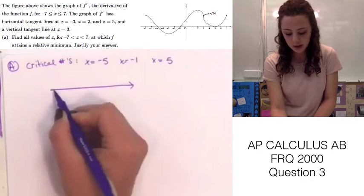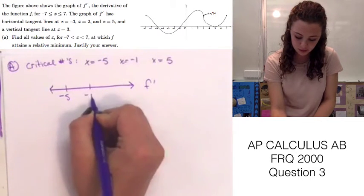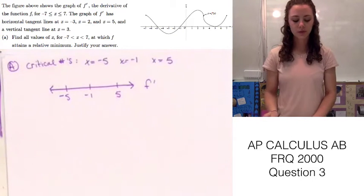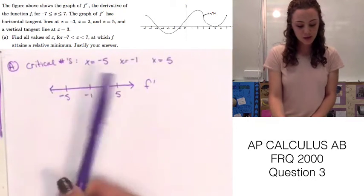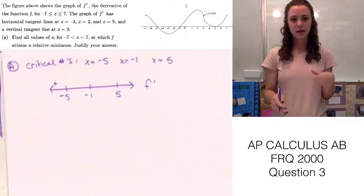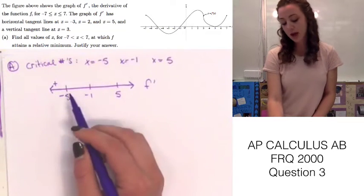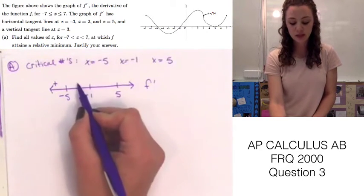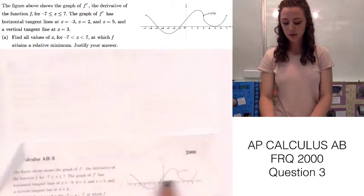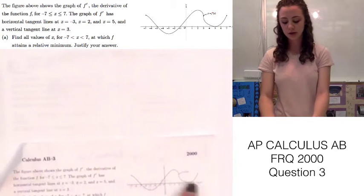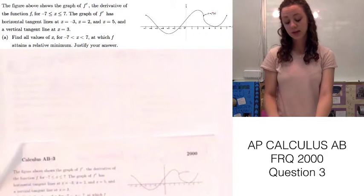In order to find which one is the relative minimum, let's make a number line representing f prime and put in negative 5, negative 1, and 5. If we plug in a number less than negative 5, just by looking at the graph, we can see those values are positive. For numbers between negative 5 and negative 1, they are going to be negative — values above the x-axis are positive and below are negative, so that interval is negative.